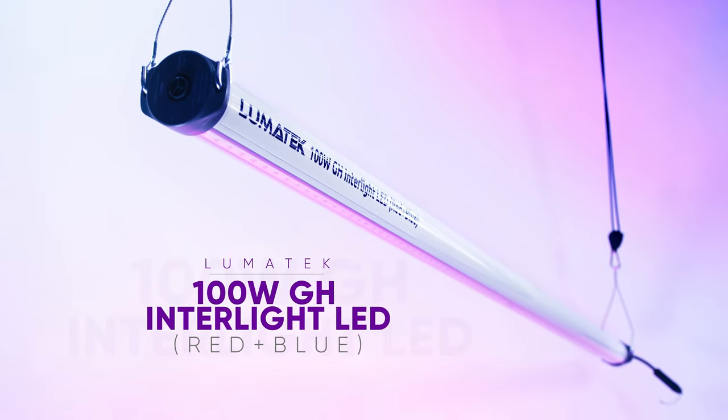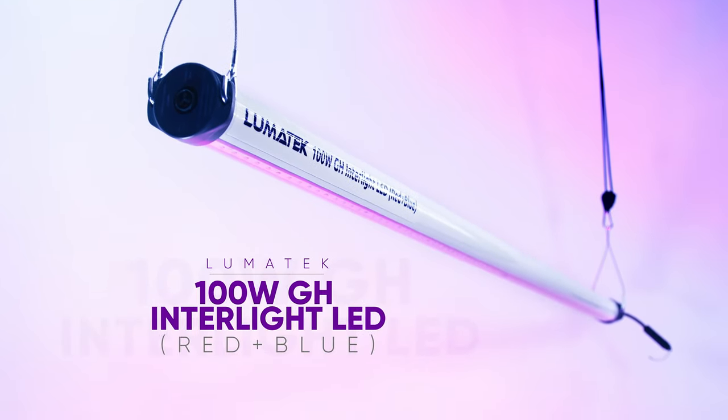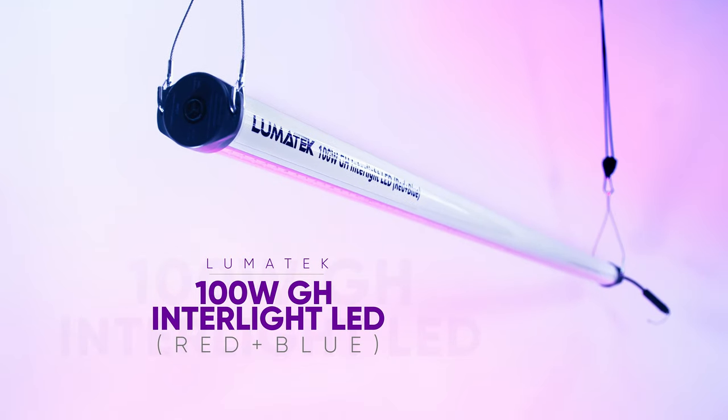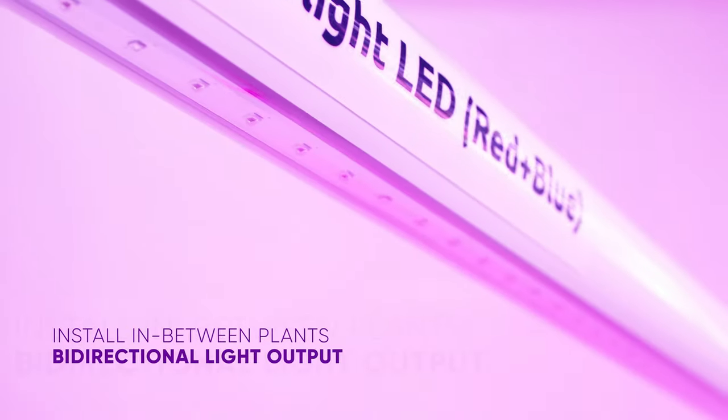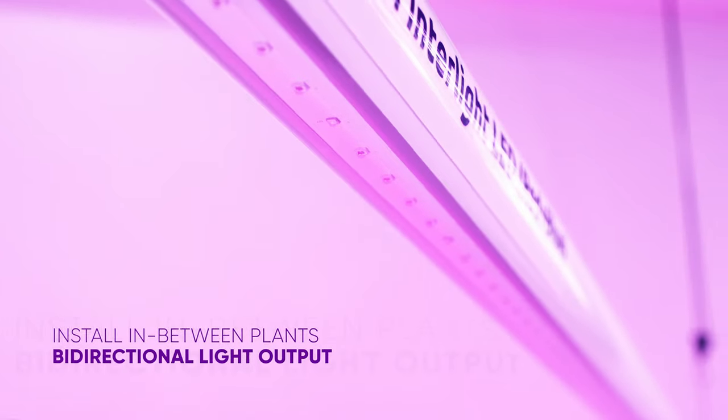Please welcome the Lumatek 100 watt greenhouse interlight LED red and blue. A very slim, creative, and lean solution to install in between your plants. Thanks to its bi-directional light output, the special design will allow the under canopy individual leaves to absorb more light intensity and light quality.